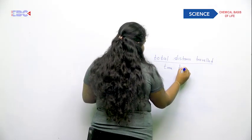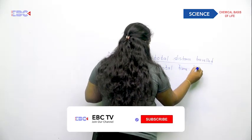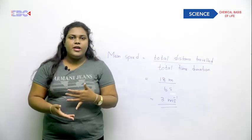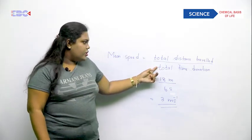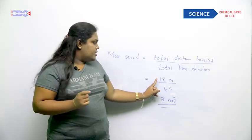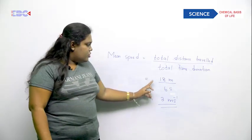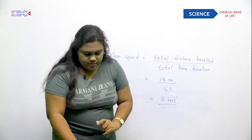To calculate mean speed, divide the total distance traveled by the total time duration. The total distance in this table is 18 meters and the time taken is 6 seconds. Simplifying gives 3 meters per second — that is the mean speed for this motion. This is the end of the first part, and we will discuss the other parts of this lesson in the next program.